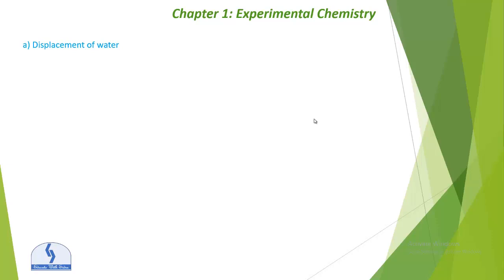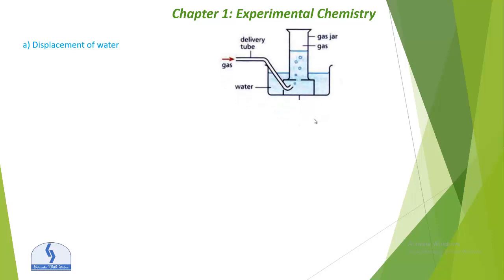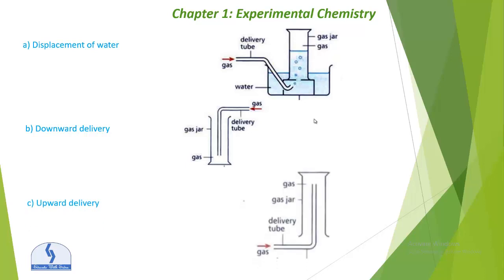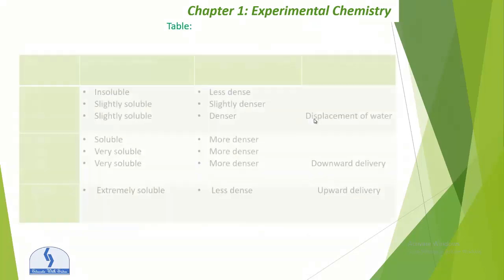We have three methods for collecting gases: displacement of water, downward delivery, and upward delivery. In displacement of water, gas travels through a delivery tube into a gas jar. You can see the figure for downward delivery and upward delivery as well.